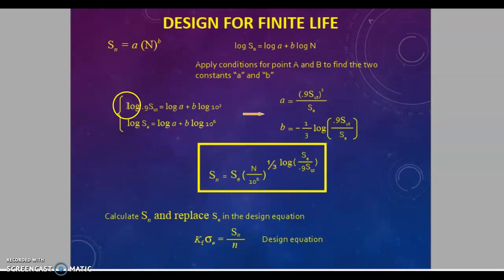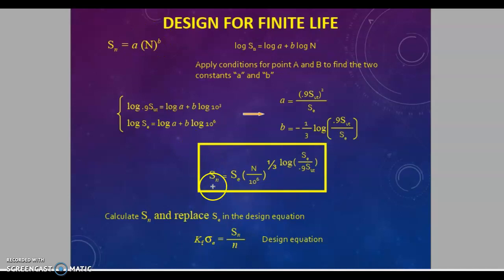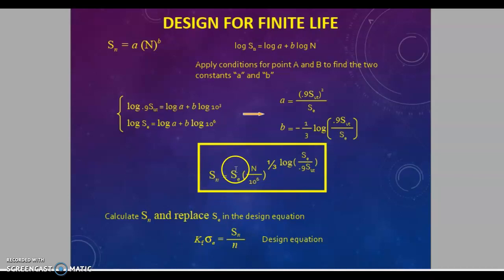This is the straight-line equation in logarithmic terms, and from that, small a and small b are calculated. Small a and small b are substituted into this formula, and the value of SN — that is, strength at any number of cycles — is obtained from the endurance limit value. Once the endurance limit value is known, you can get the strength value at any number of cycles.